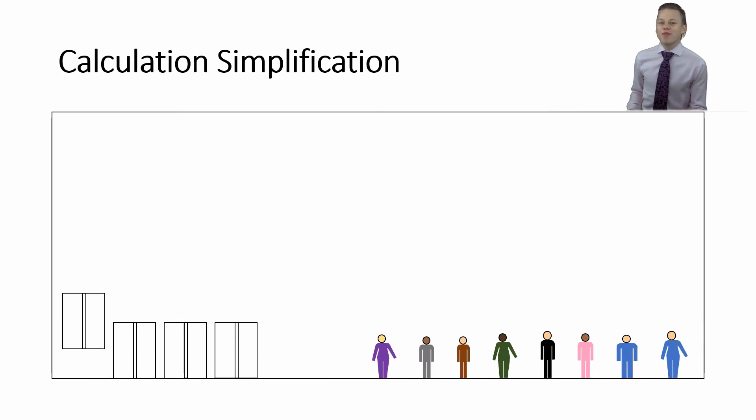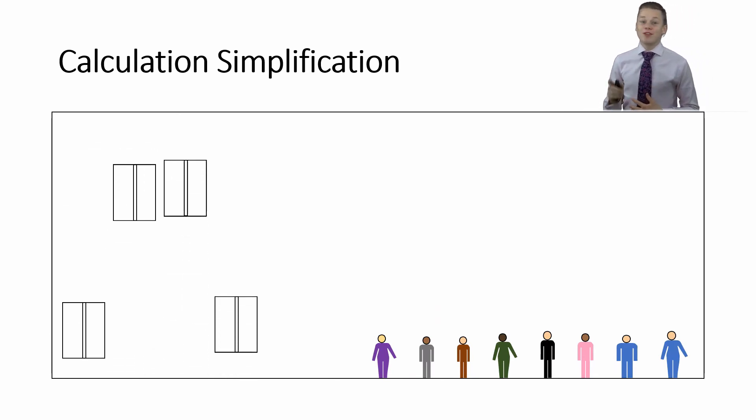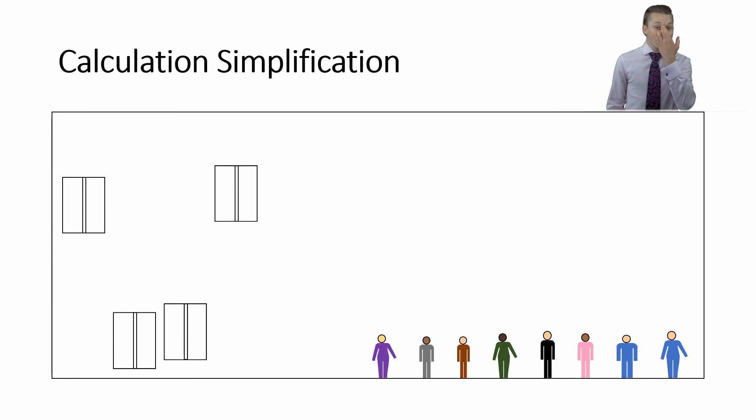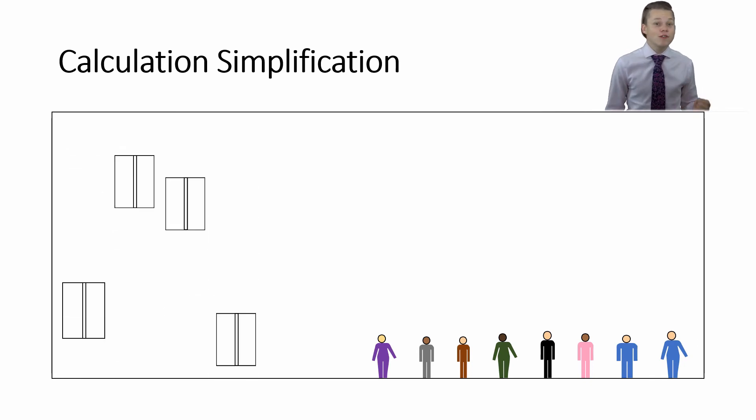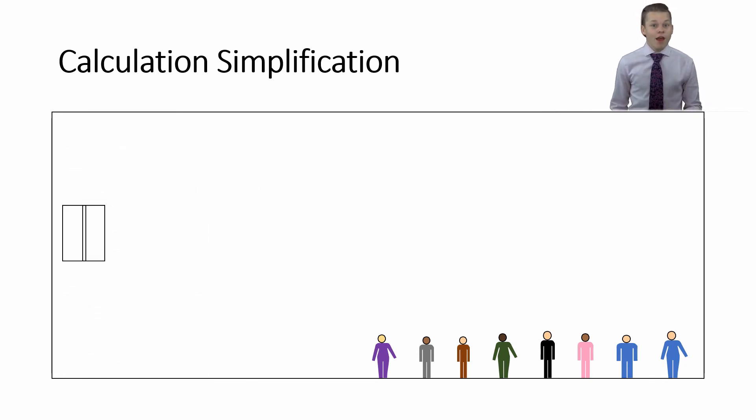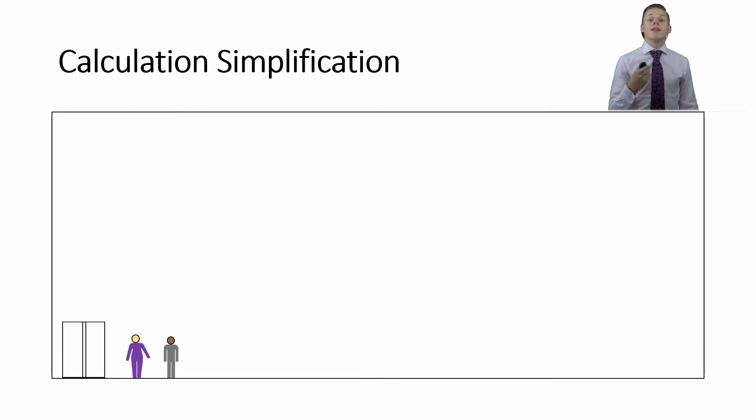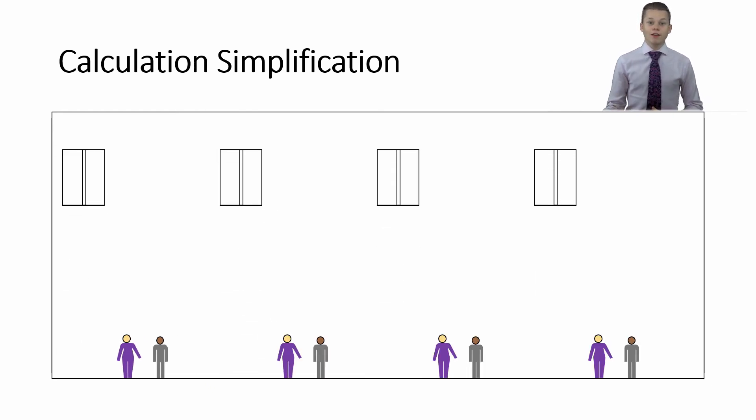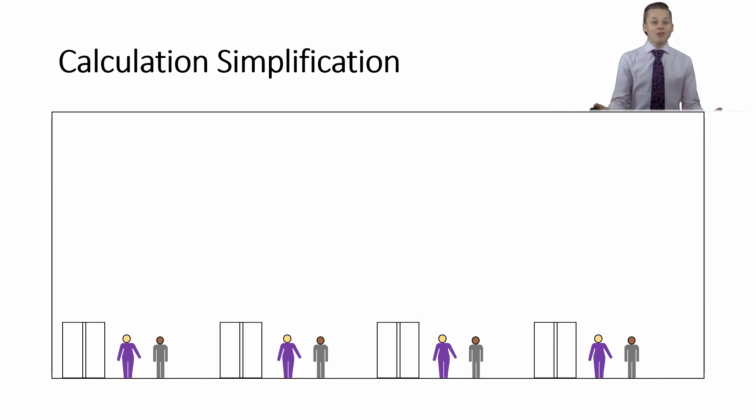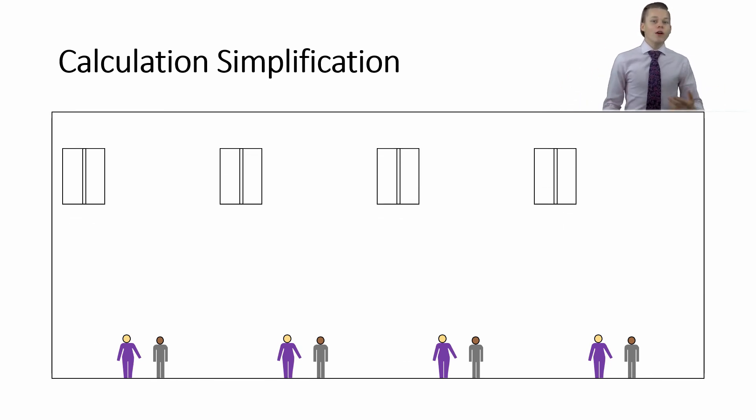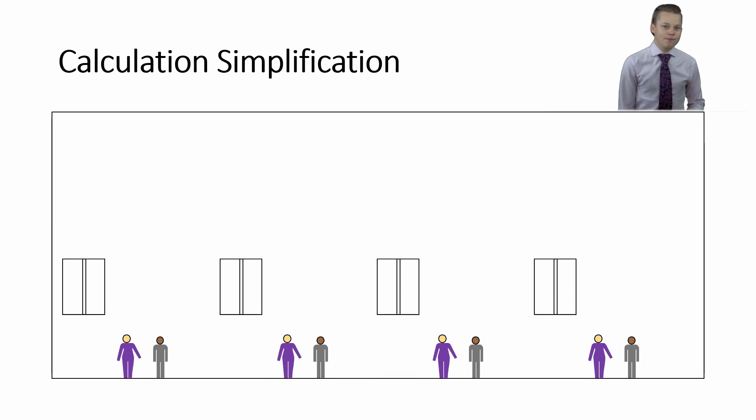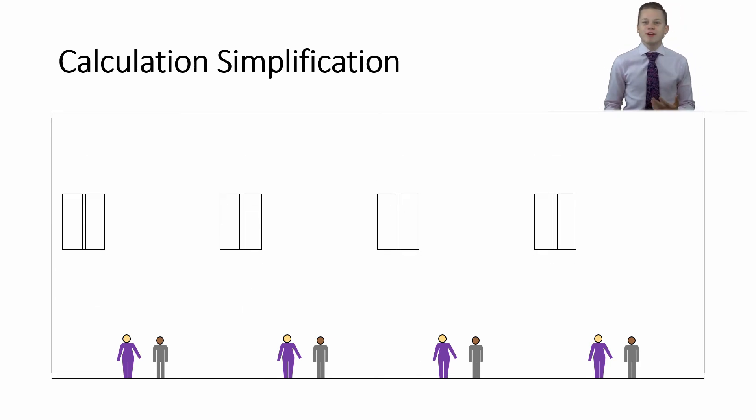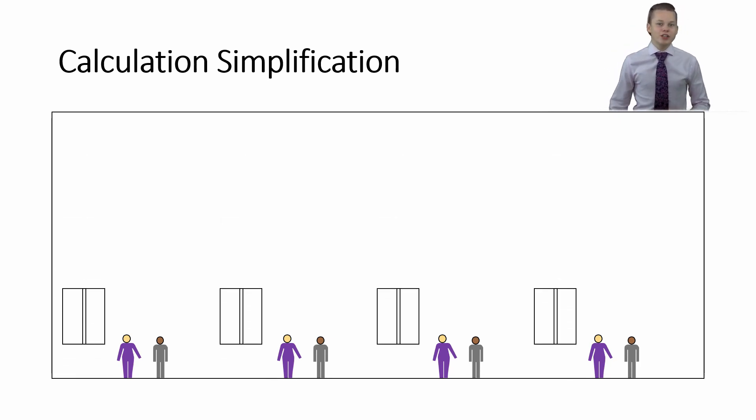So as I said before calculations simplify the model and multiple lifts is no exception to that. The way a calculation works is to reduce the number of lifts to one and then reduces the passenger count by reducing the demand proportionally. It can then run the calculation with one lift and at the end of the calculation it multiplies the results by the number of lifts to get the correct capacity values. And this works so long as your passengers are assigned randomly. Calculation doesn't really work when you want to test destination control.